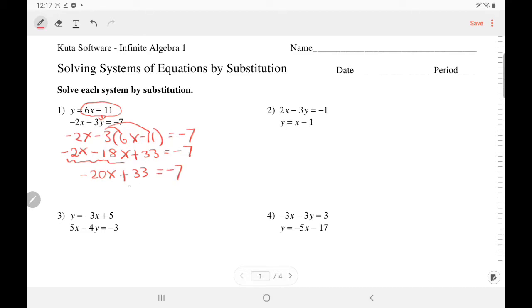Negative 2x minus 18x became more negative, so it's negative 20x plus 33 equals negative 7. Isolate your x by subtracting 33. So negative 20x equals negative 40. Divide. So x equals 2.